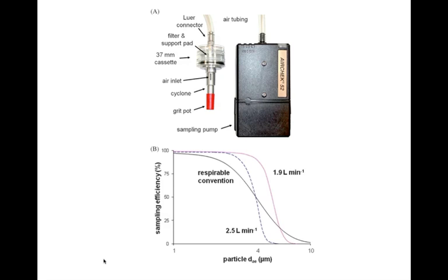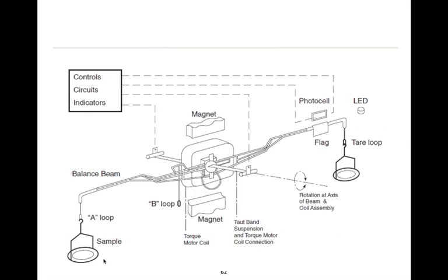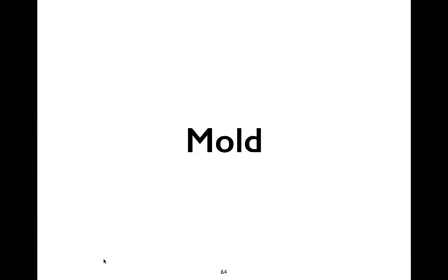Without the cyclone, you're measuring total particulates. There are also direct optical measuring devices that display the amount of particulate matter in real time. The filter has a support pad to prevent breakage when air is sucked through it, and the actual filter captures the particles for gravimetric analysis.